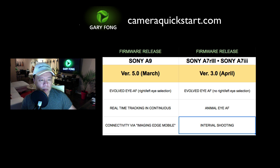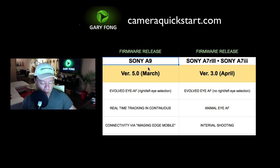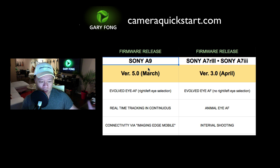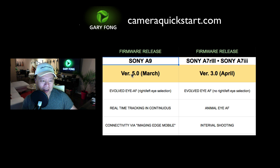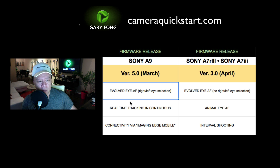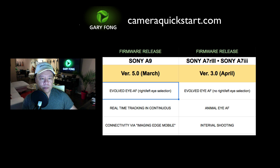I did contact Sony and asked about the firmware releases. Right now your Sony A9 will not do predictive AI tracking, but you just do the firmware procedure, restart your camera, the menus change, and you get the ability to do AI tracking. That's coming in March. It also comes with evolved IAF allowing you to choose right or left eye selection, and real-time tracking in continuous — which is what you saw in my demo at the beach and on the basketball court.